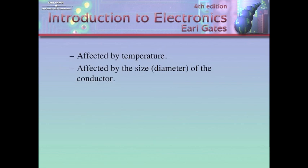Resistance is affected by temperature. When the temperature changes, the value of resistance is going to change, so there's a direct relationship between temperature and resistance. Resistance is also affected by size or the diameter of the conductor. Basically, the thicker the diameter is, the less resistance there is, because there is more conducting material. So this is why you always want to use the thickest wire that you possibly can afford for a project.